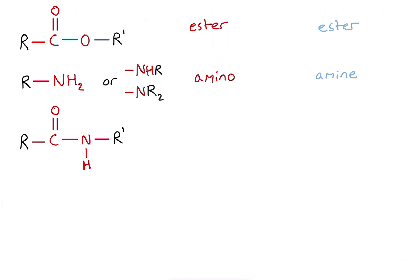Next, we have a functional group that has both a carbonyl group and an amino group in it. This is known as the amido functional group, sometimes called the carboxamide functional group, and this belongs to the class of compounds called the amides. Again, there's a similarity between the functional group name and the class.